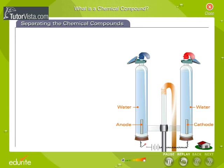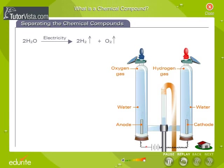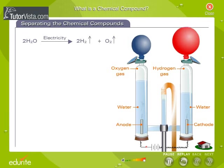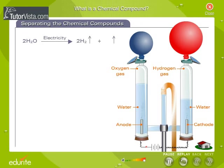By using electricity, we can break the bonds holding the elements hydrogen and oxygen present in the compound water. When an electric current passes through two tubes full of water, it breaks the tight bonds between the hydrogen and oxygen atoms in each water molecule. Oxygen atoms bubble up to fill the blue balloon, while hydrogen atoms fill up the red balloon. There are two hydrogen atoms for every atom of oxygen in a water molecule, H2O. Therefore, the red balloon fills up faster.